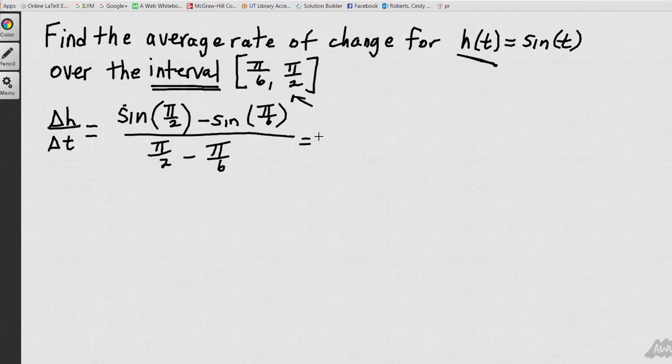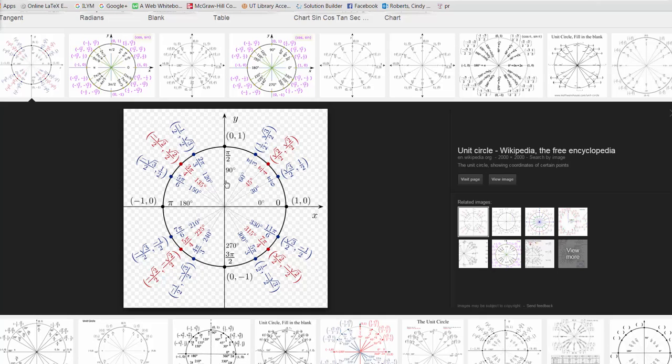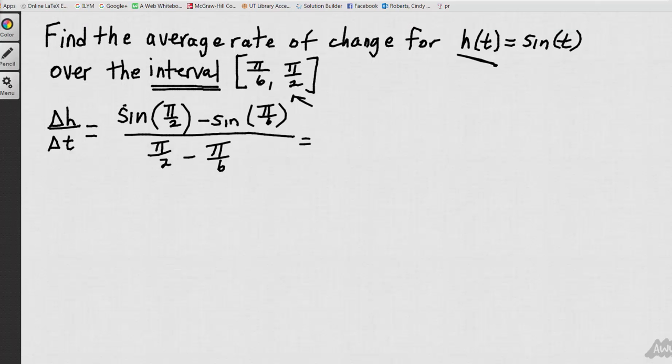From here, I would go find a unit circle and figure out what the sine of pi over 2 is, if you don't remember, and the sine of pi over 6. So I have a little unit circle here. The sine of pi over 2, if you remember, sine is the y value. So if I'm at pi over 2, that's 1. Sine of pi over 6, the y value is 1 half. So the sine of pi over 2 is 1, and pi over 6 is 1 half.